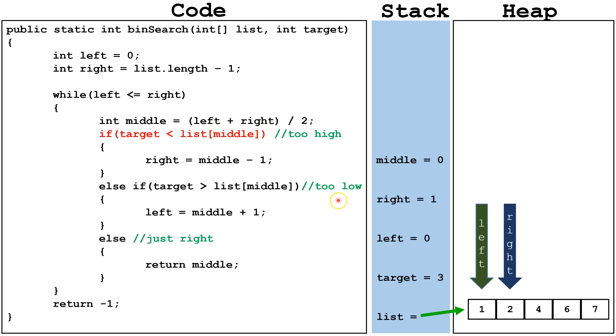So now we're going to check is our target, 3, less than list index 0, is 3 less than 1? That's false. So we're going to go down to the else if. Now we're going to check is target greater than list index middle? 3 is greater than 1, so now we're going to set left equal to middle plus 1. So now we have the left and the right arrow right on top of each other. The only part of the list we're looking at is this index right here.